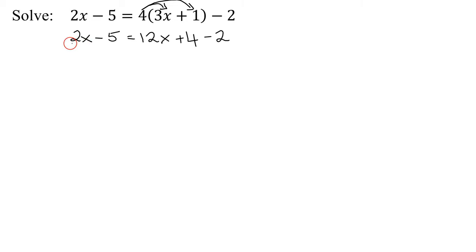Now, can I combine any terms on the left? No, unlike terms. How about on the right? Yes, I have 4 minus 2, so I can combine those two terms. So I have 2x minus 5 equals 12x, and then 4 minus 2 is plus 2.